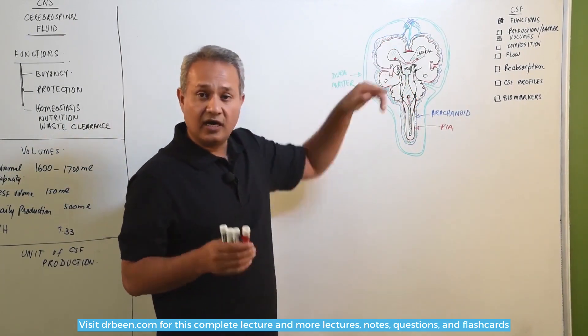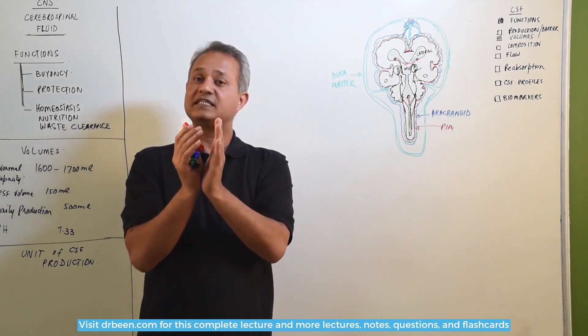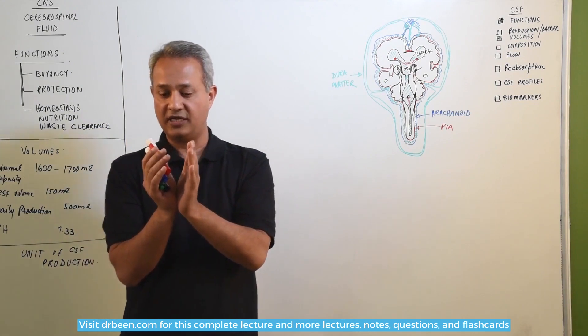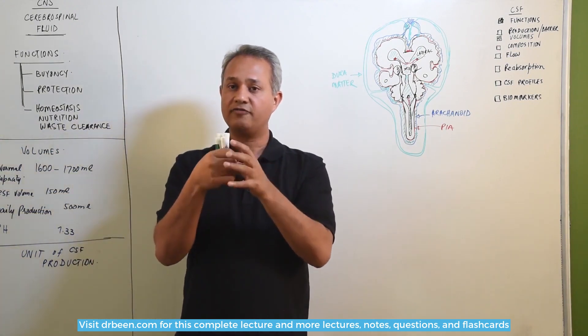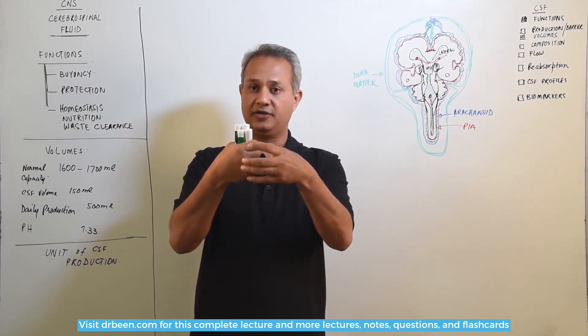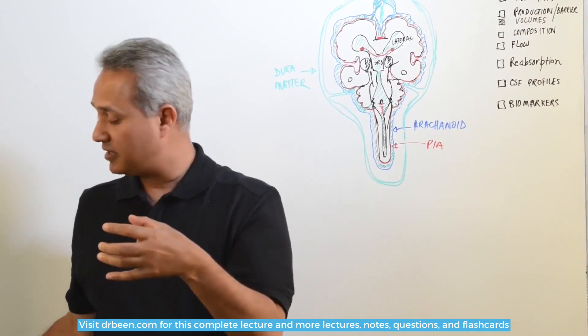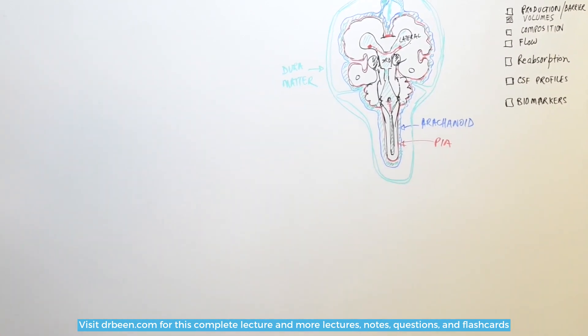The blood vessels that are present are in contact with the ependymal cells. The blood CSF barrier is really the wall of the capillary and the ependymal cell around this. That is the barrier. We have to see how does that barrier function, but before that let us see the structure of the barrier.